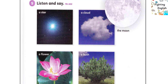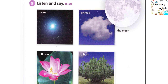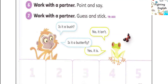A bush, the moon. Activity 7: Work with a partner — guess and stick. Example: Is it a bush? No, it isn't.